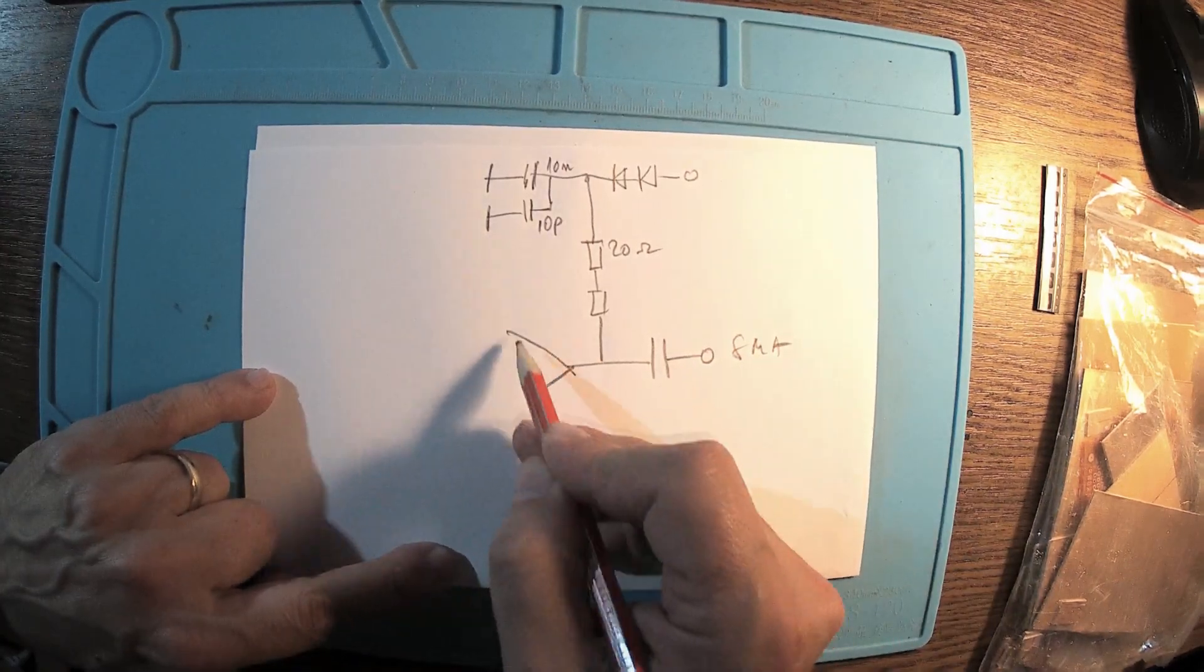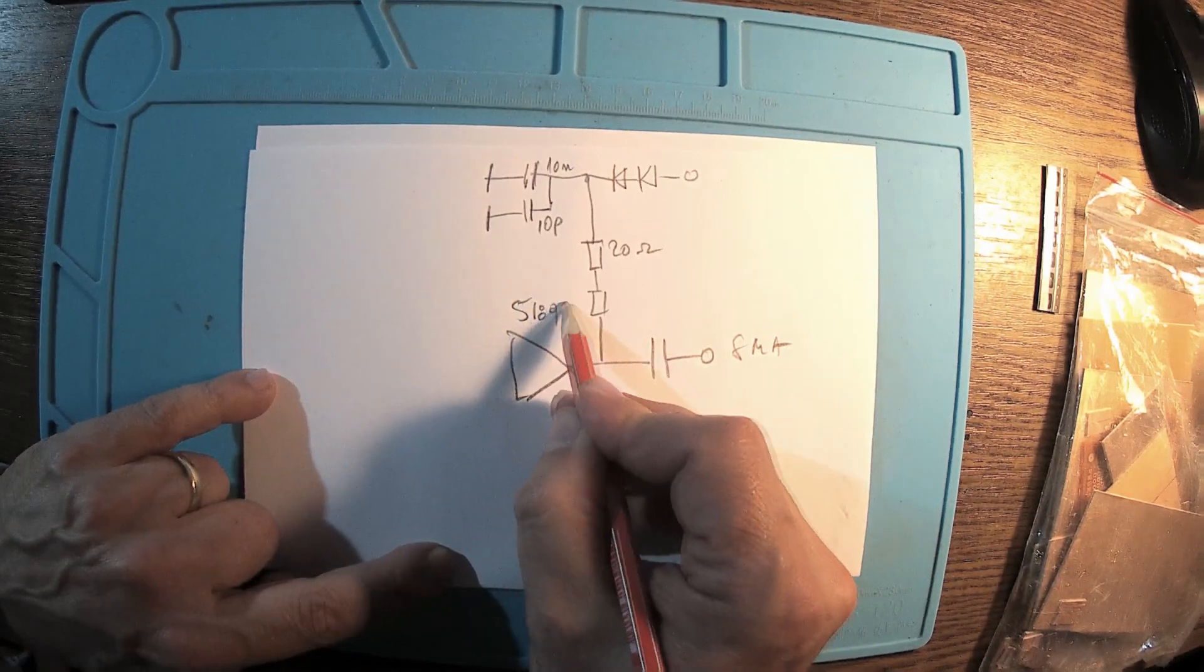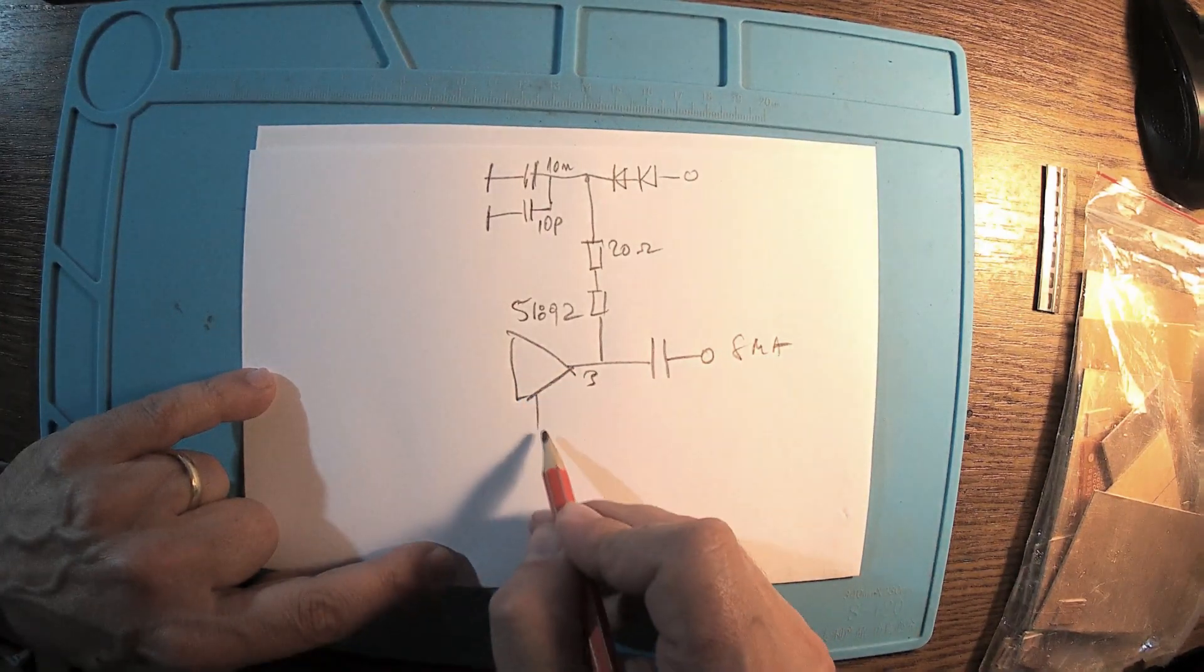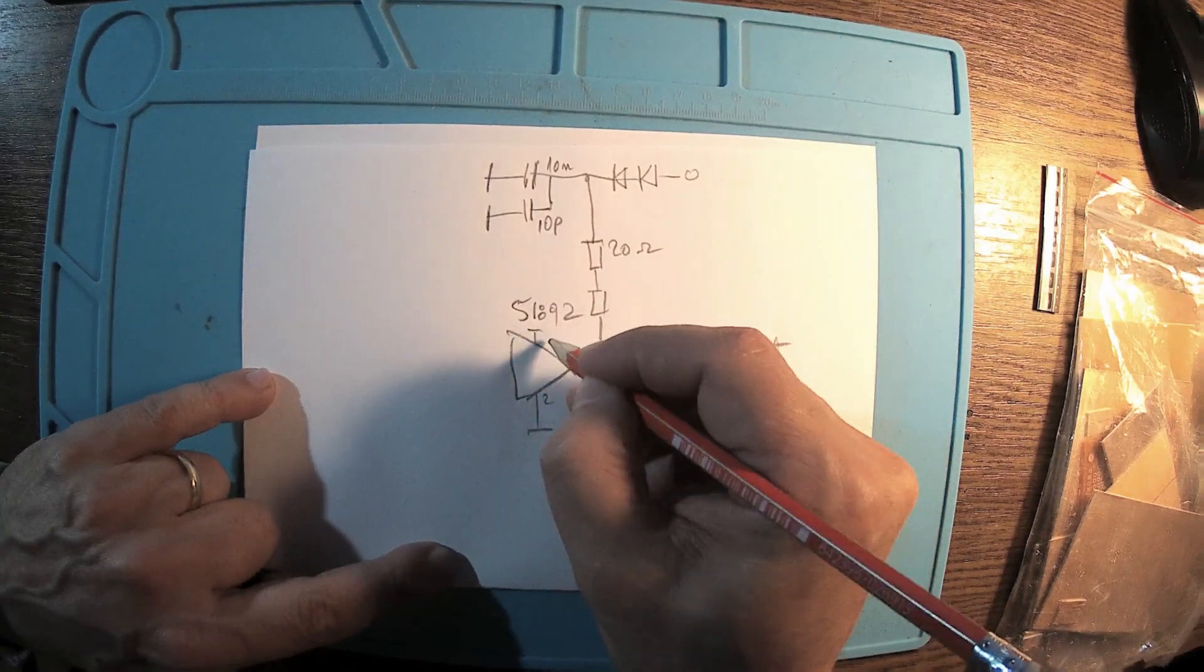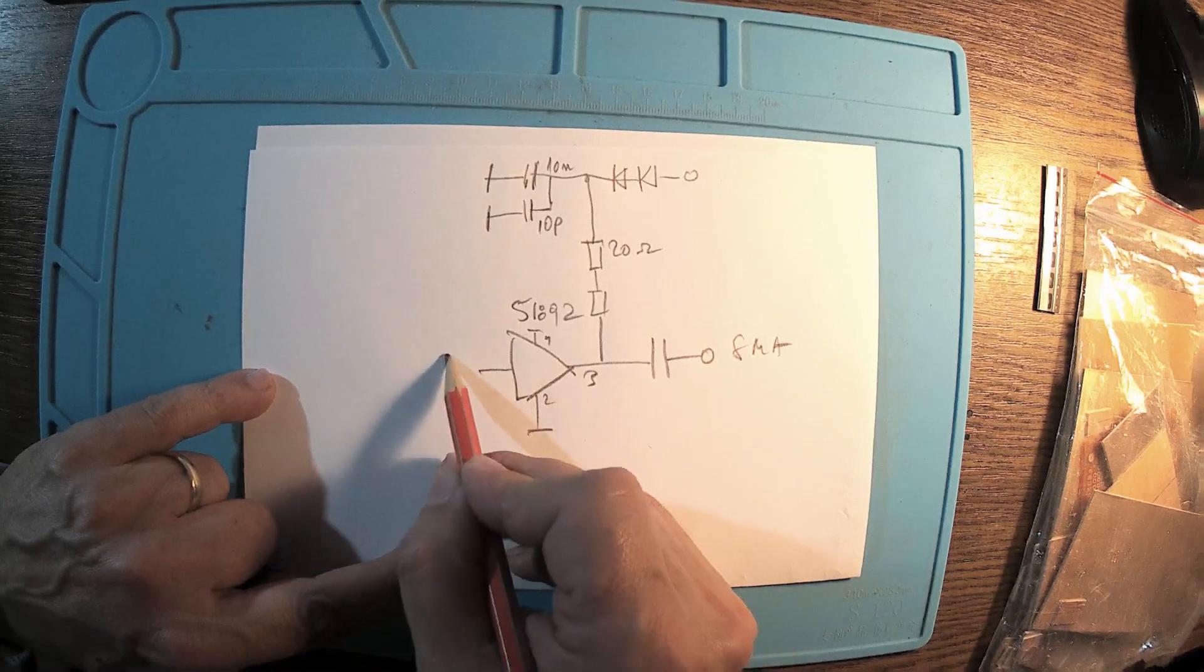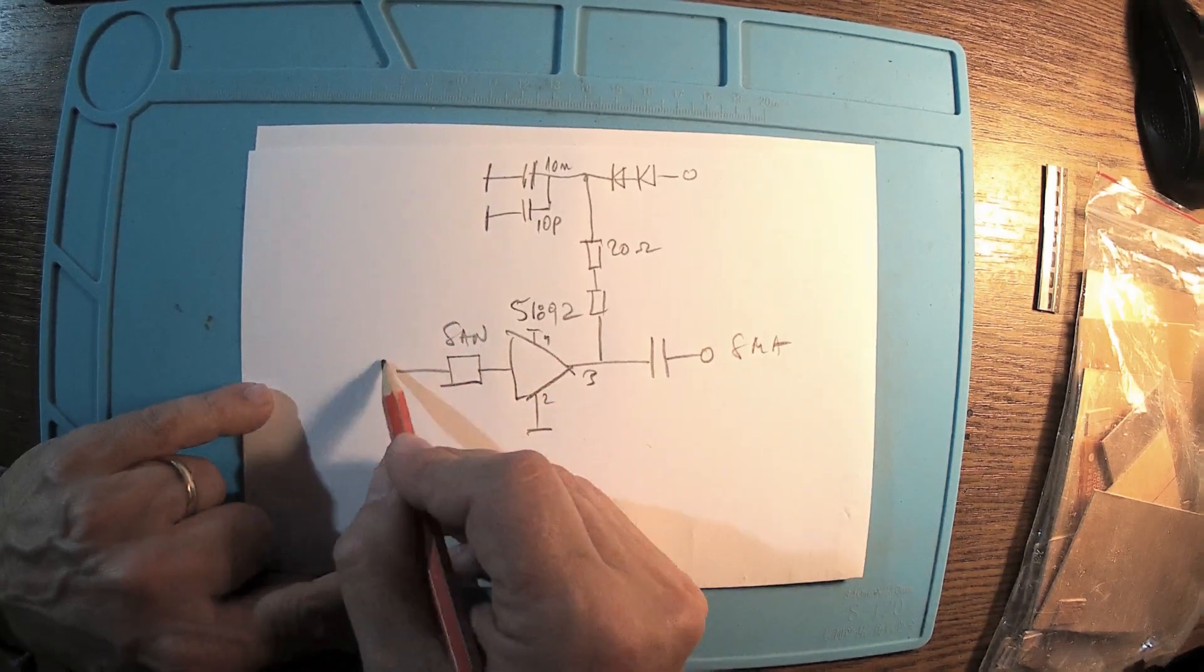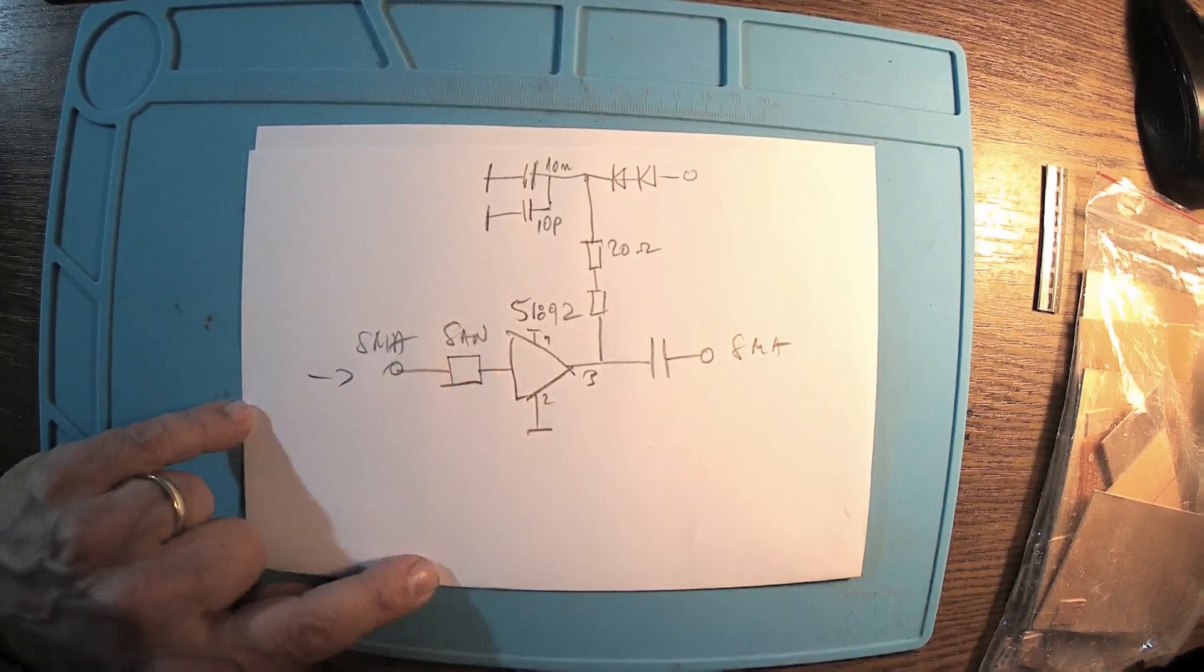Now here we have the circuit 5189Z. This is pin number three, pin number two goes to ground, also the big radiator pin. Here I'm going to have a SAW filter at the input and SMA connector.